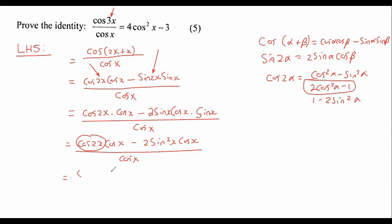So cos 2x, I'm going to open up a bracket and I'm going to change it to 2 cos squared x minus 1. Then I multiply that with cos x, then it's minus 2 sin squared x times cos x over cos x.